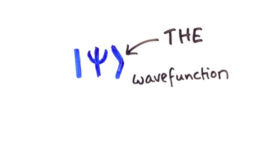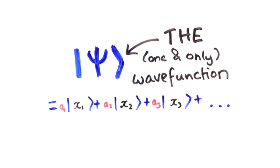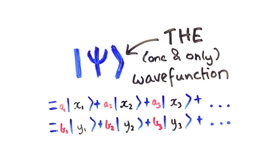In fact, the way physicists like to think of it is, there is only one wave function, and it knows everything there is to know about the particle, and it's possible to write that whole wave function in terms of any observable you want.